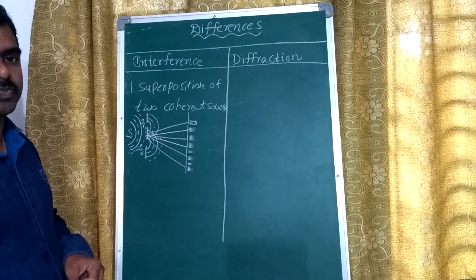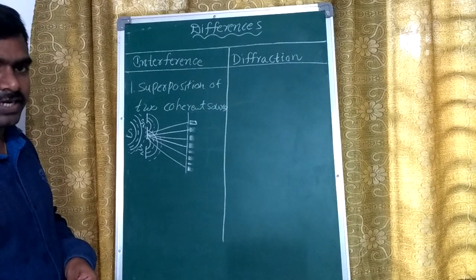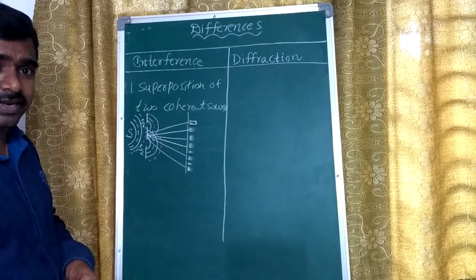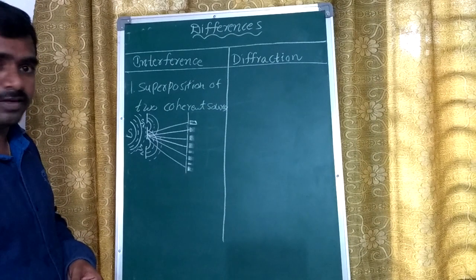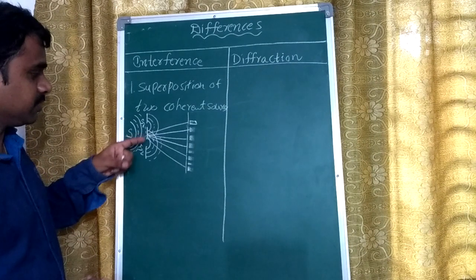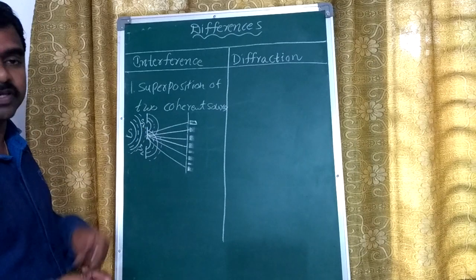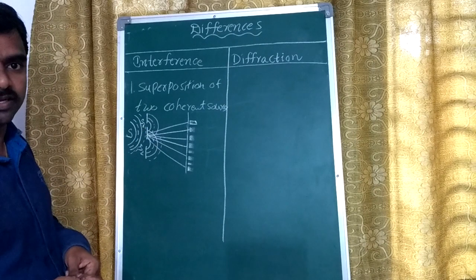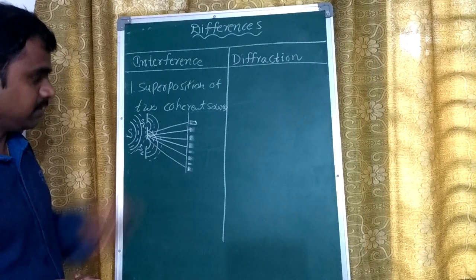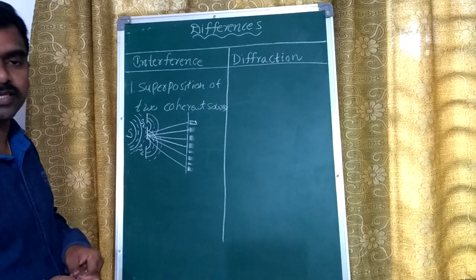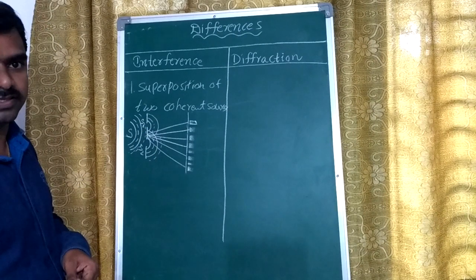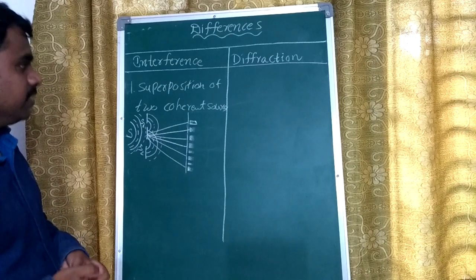In Newton's rings experiment, we got rings. Why? Because based on the aperture we are taking, the fringes change.